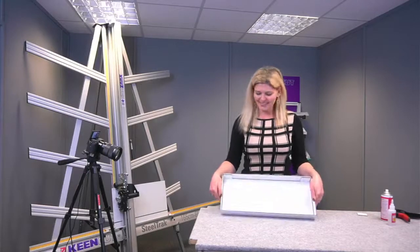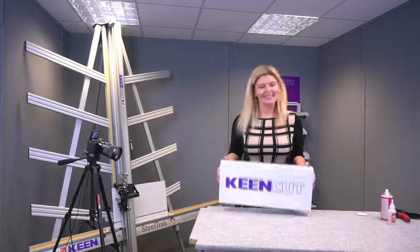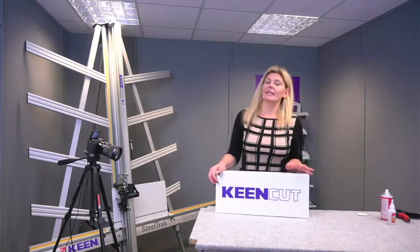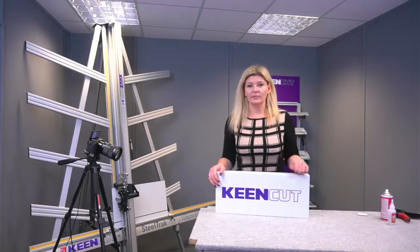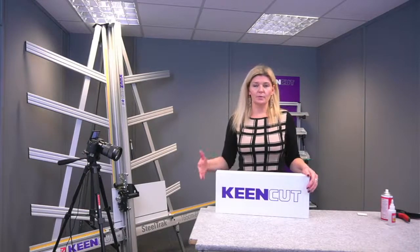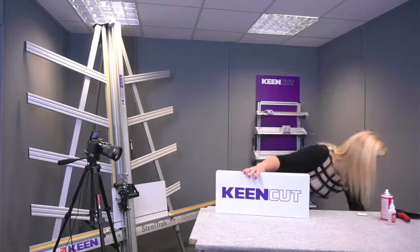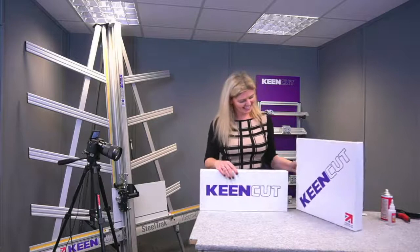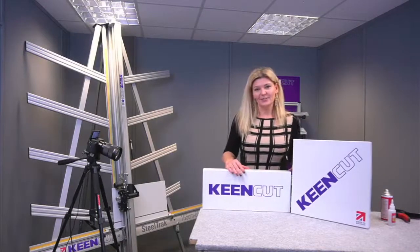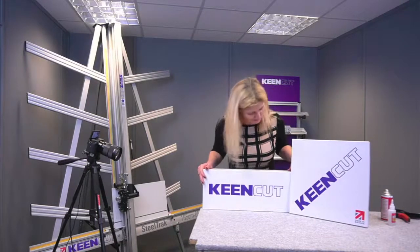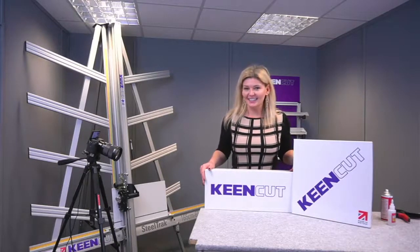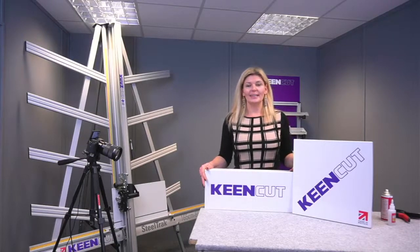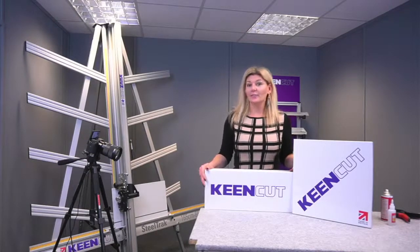So once you have completed your corners you will end up with a sign tray looking like this. Now the great thing about sign trays is the fact that you can manufacture different sizes so you can do oblong rectangular ones and you can also produce square ones so here's the square one that I did earlier. So they are quite effective and they look rather good. I hope you have enjoyed the session and that it's been a logical process of how to manufacture a sign tray with the KeenCut V-grooving tool and the steel track itself.